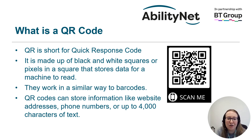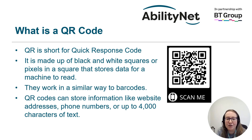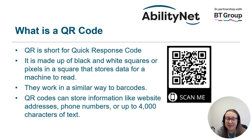So what is a QR code? QR is short for quick response code, and it's an image made up of black and white squares that stores data for a machine to read. They work in a very similar way to barcodes. A QR code can store information like web addresses, phone numbers, or up to 4,000 characters of text that someone can send to you.